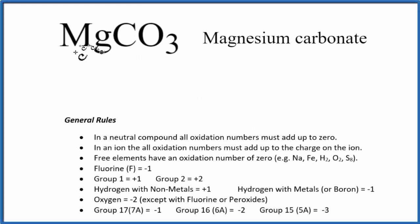To find the oxidation number for each element in MgCO3, magnesium carbonate, we're going to use these rules. The first thing we need to know is this is a neutral compound, so there's no charge like we'd see with an ion. If we have a neutral compound, all the oxidation numbers are going to add up to zero.